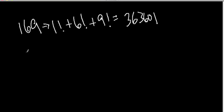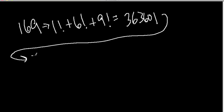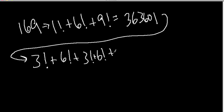And then I have to repeat the process with this number. So now I would add these factorials, 3 factorial plus 6 factorial plus 3 factorial plus 6 factorial plus 0 factorial plus 1 factorial. If we add those, what we get is 1,454. And repeat again.